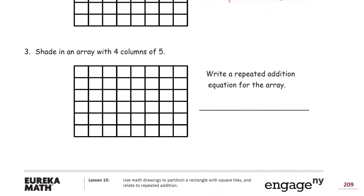Shade in an array with four columns of five. So if I need four columns, that's one, two, three, four. That's where my columns are going to start. And now I need five in each column. So that's one, two, three, four, five. They're going to go that far down. And then I can just take the whole thing and fill in the whole rectangle at once.